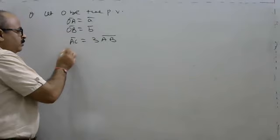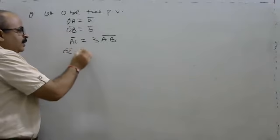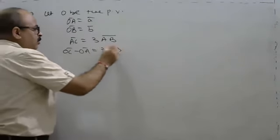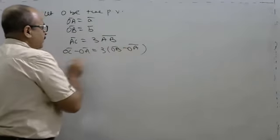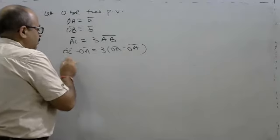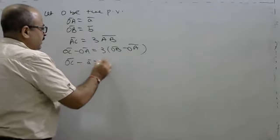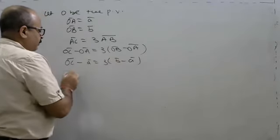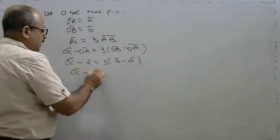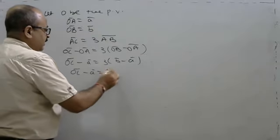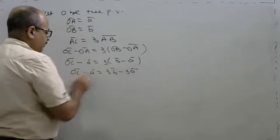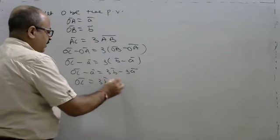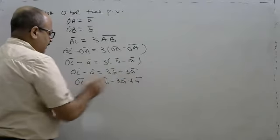We say that vector OA is equal to vector A, and vector OB is equal to vector B. OC minus OA is equal to OB minus OA. So OC is equal to 3 vector B minus 3 vector A plus vector A.